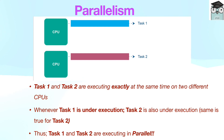For example, in the diagram shown on the screen, task 1 and task 2 are executing exactly at the same time on two different CPUs. Whenever task 1 is executing, task 2 is also executing. Thus, task 1 and task 2 are executing in parallel. Notice that parallelism can only be achieved on multi-processor systems.